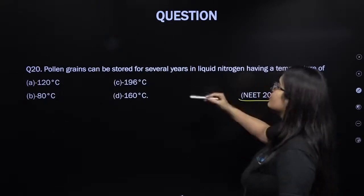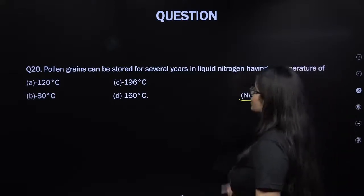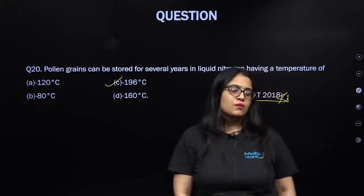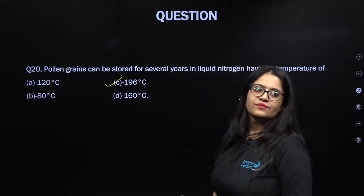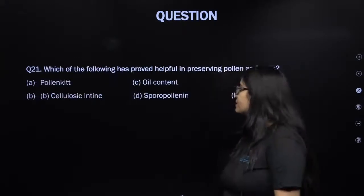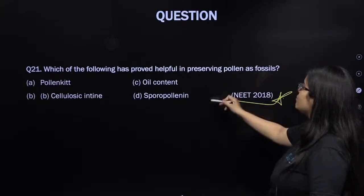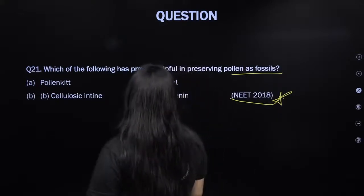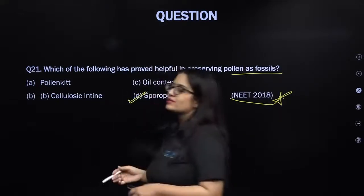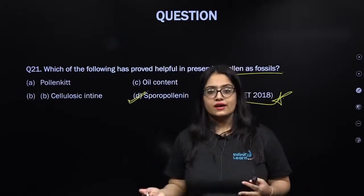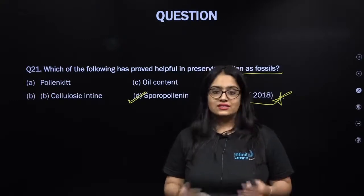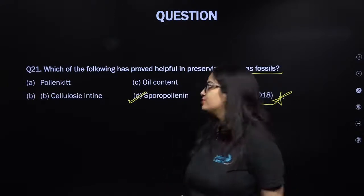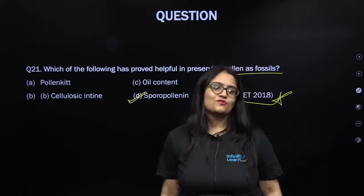From NEET 2018: pollen grains can be stored for several years in liquid nitrogen at minus 196 degrees centigrade, and such pollen grains can be used in plant breeding programs to produce plants of desirable types. Which of the following has proved helpful in preserving pollens as fossils? It is because of sporopollenin — present in the exine, the outermost hard wall of the pollen grain — which can withstand high temperature, basic environment, and no known enzyme can degrade it.